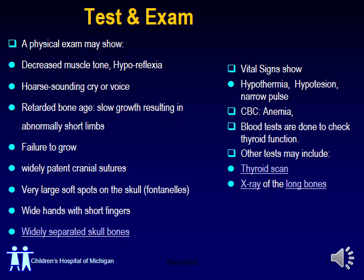A thyroid scan is used to evaluate the thyroid tissue. If there are any problems — lesions, masses, or underdeveloped tissue — these can be identified on the thyroid scan exam. X-ray for long bones is also used in diagnostic evaluation.